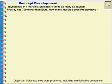For our next problem: Jaden has 347 marbles. Elvis has four times as many as Jaden. Presley has 799 fewer than Elvis. How many marbles does Presley have? We'll start with Jaden. I know that he has 347 marbles, so I'm going to represent Jaden's portion of marbles with a tape diagram.